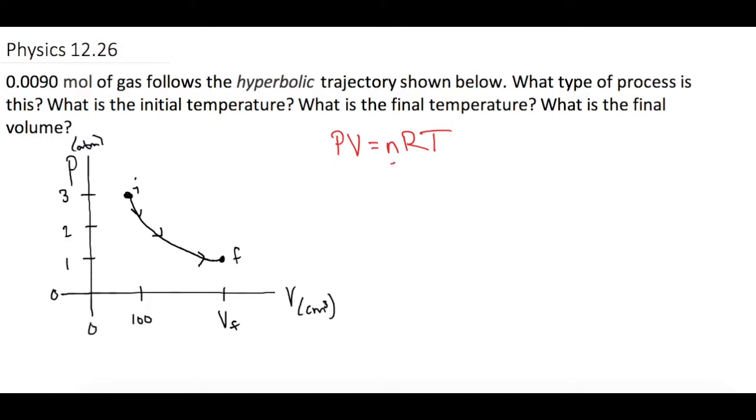In this case our number of moles is going to stay constant. R of course isn't going to change and we just talked about how P and V are also changing. So in order for this to work the only thing that this could be is an isothermal process. So part A is going to be isothermal.